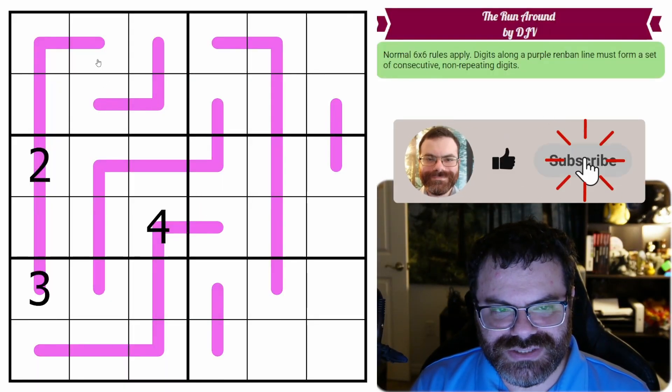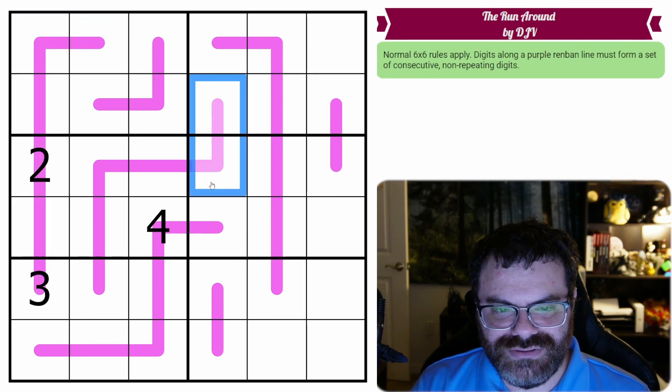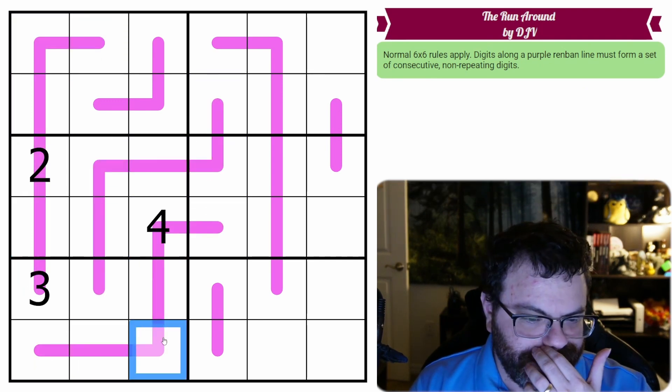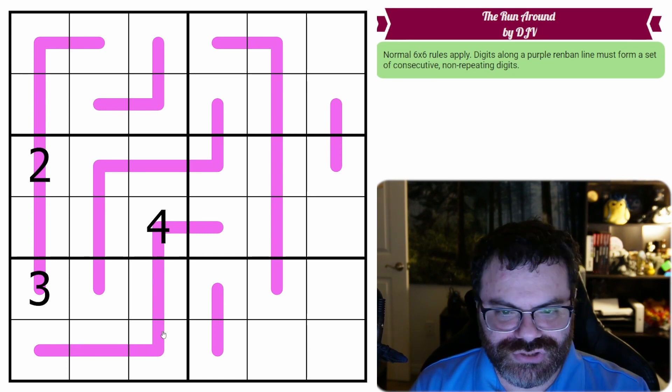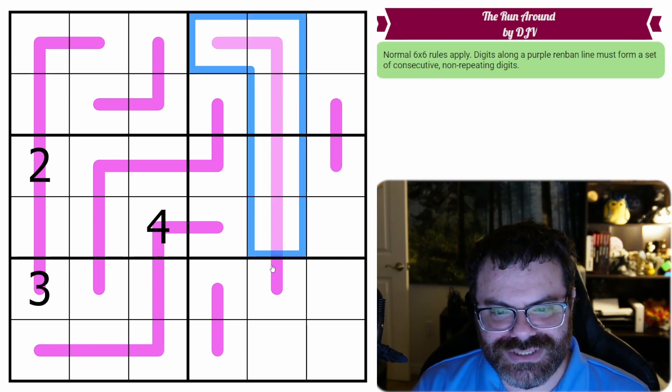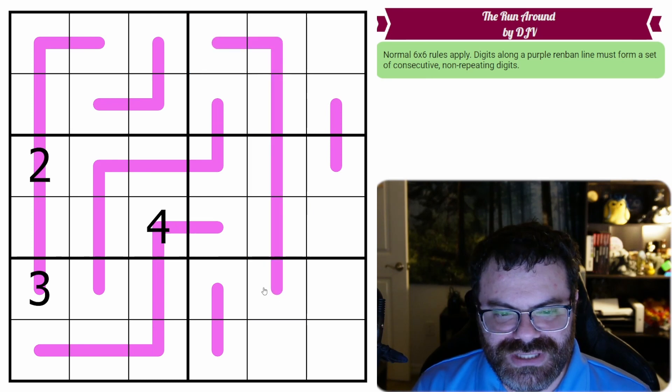So I really think the key to this puzzle is going to be the plethora of 6-length RenBands in the grid, which really you can think of as non-repeating lines or extra regions because they're going to have 1 through 6 on them because you can't repeat.